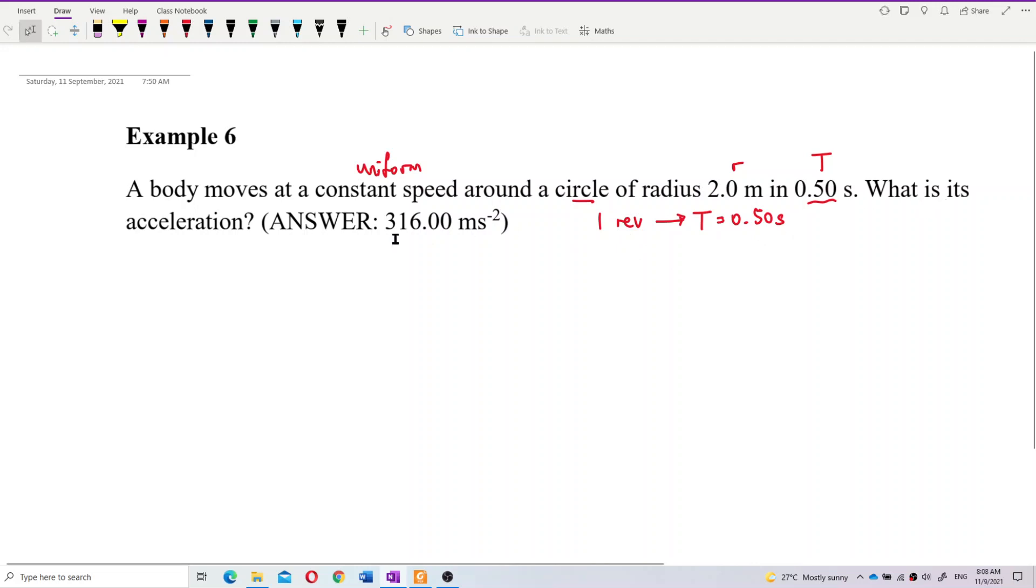So what is its acceleration? To move in a circle, you must have the centripetal acceleration. So the symbol is AC.